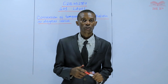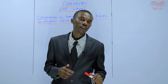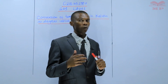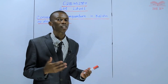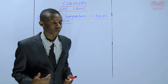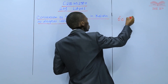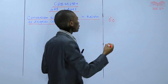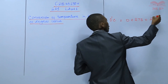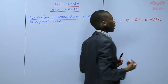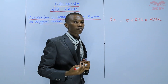Remember in the previous lesson, we discussed the conversion of temperature from degrees Celsius to Kelvin. To remind you, we said that to convert temperature from degrees Celsius to Kelvin, you add 273.